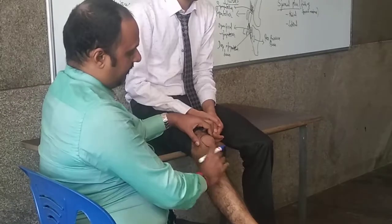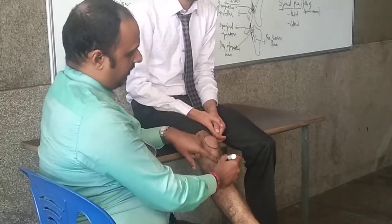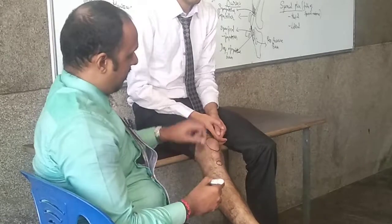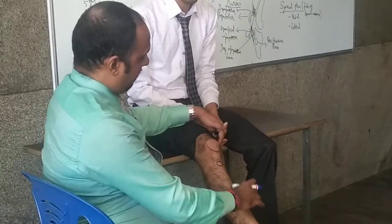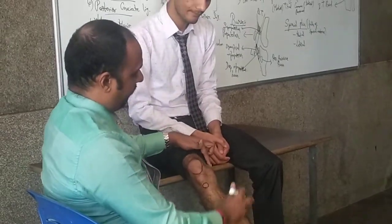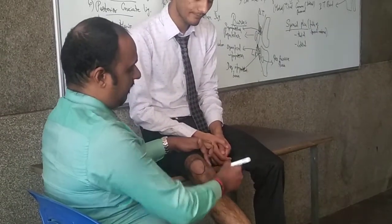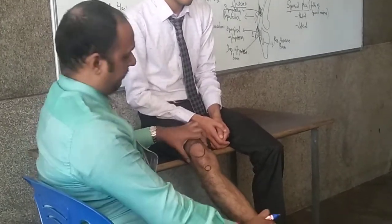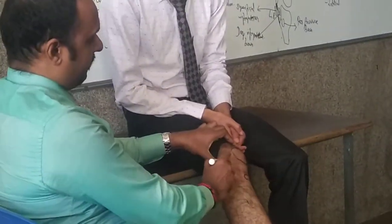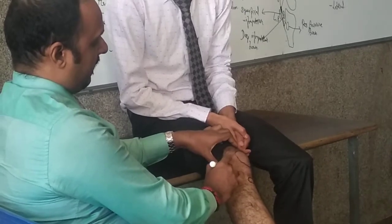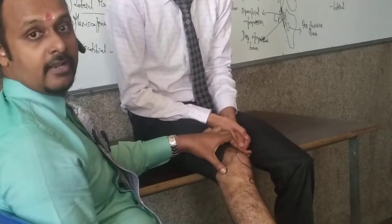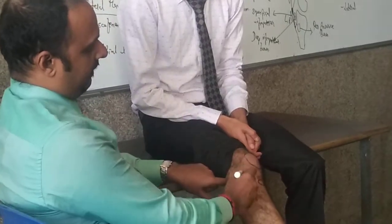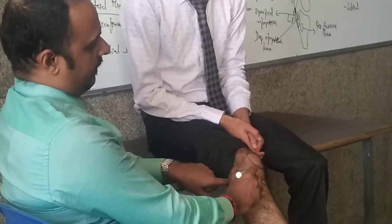And after that, tibial tubercle — tibial tuberosity. And then distally, the femur's medial epicondyle. And then laterally when you touch the prominence, the lateral epicondyle. In the tibia, laterally, Gerdy's tubercle.